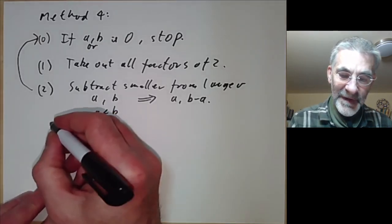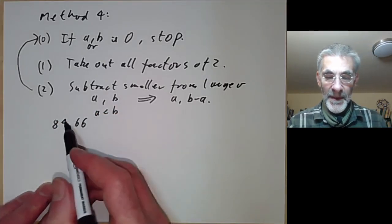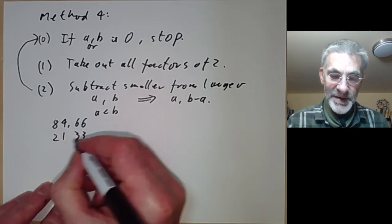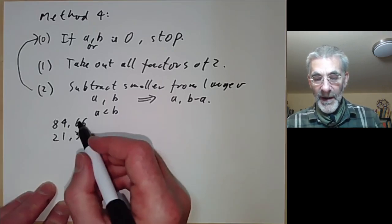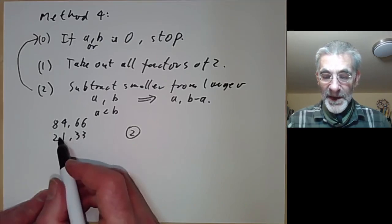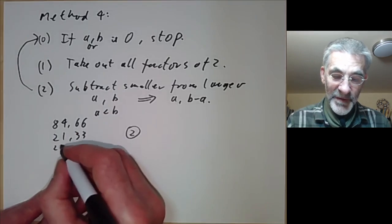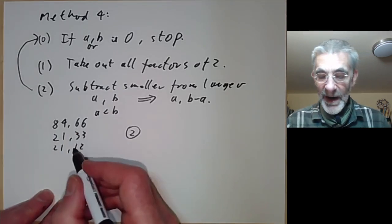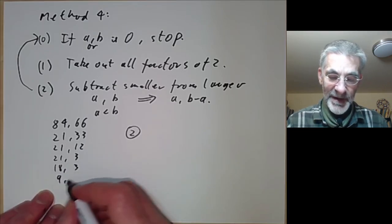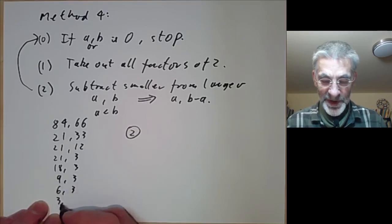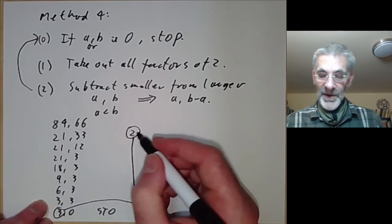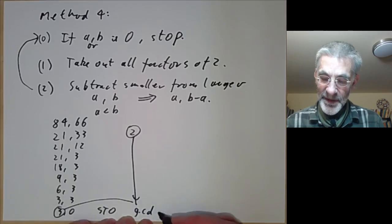Let's see an example: GCD(84, 66). Neither is zero, so we don't stop. Take out factors of 2: 84 → 21, 66 → 33, with a common factor of 2 to remember. Both are now odd, so subtract: 33 − 21 = 12, giving (21, 12). Take out factors of 2: (21, 3). Subtract: 21 − 3 = 18, giving (18, 3). Take out factors of 2: (9, 3). Subtract: 9 − 3 = 6, giving (6, 3). Take out factors of 2: (3, 3). Subtract: 3 − 3 = 0, giving (3, 0). We stop. The result is 3, but we had a factor of 2 to account for, so the GCD is 3 × 2 = 6.